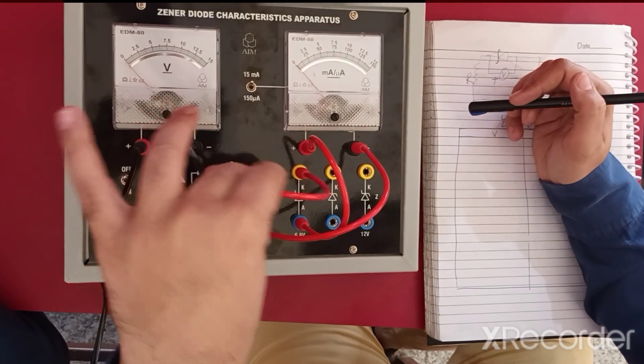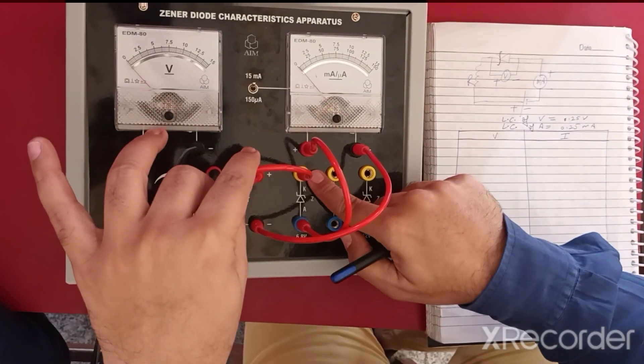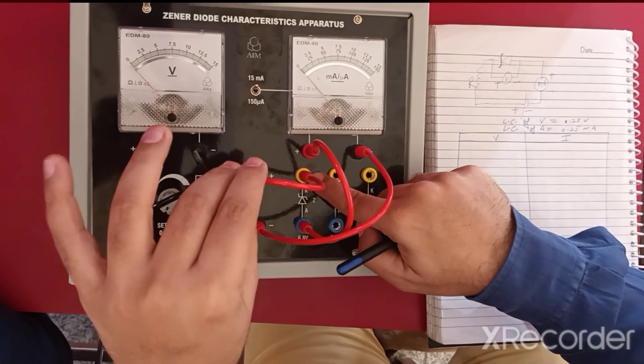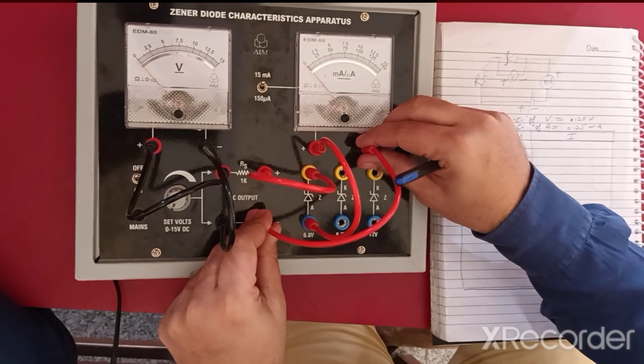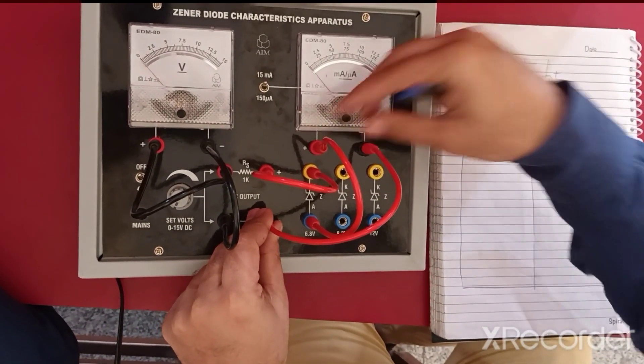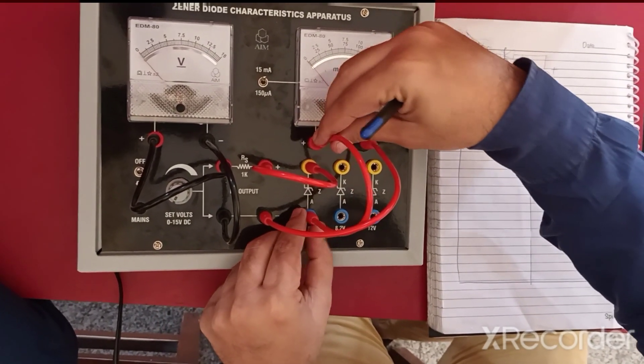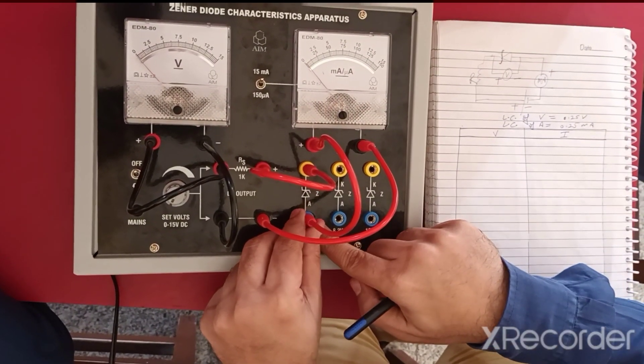The positive of the battery is further connected with the Zener diode. The negative of the battery is connected with the negative of the milliammeter, and the positive of the milliammeter is connected with the other end of the Zener diode.